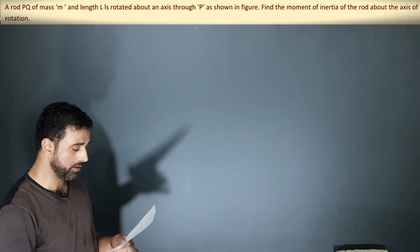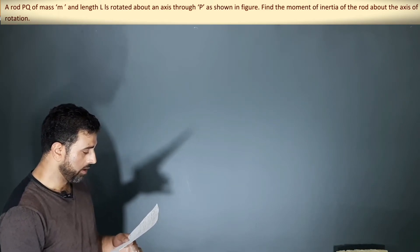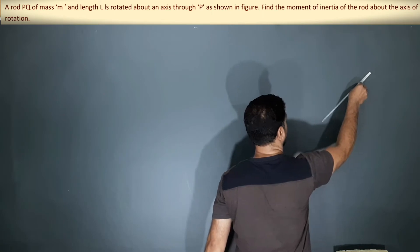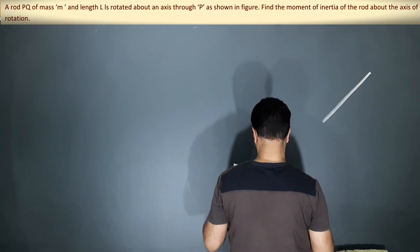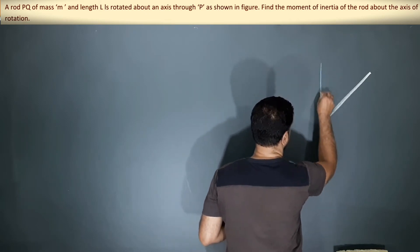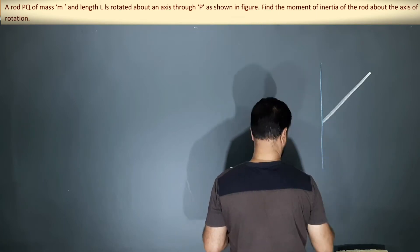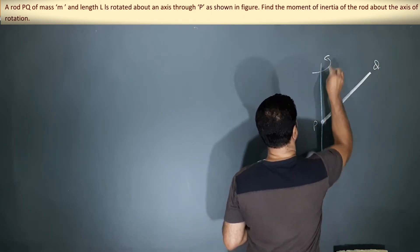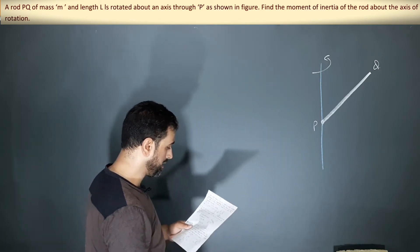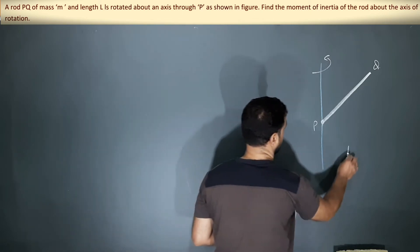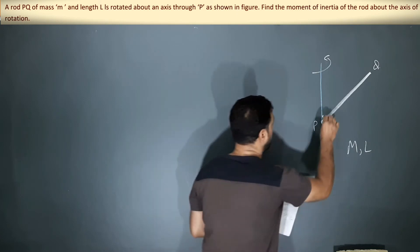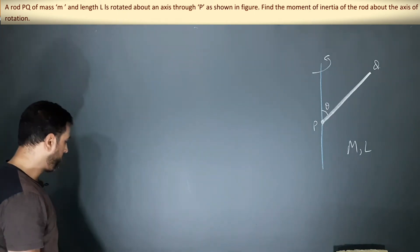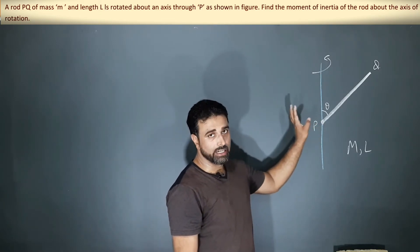A rod PQ of mass M and length L is rotated about an axis through P, as shown in the figure. So we need to find the moment of inertia. We have to go back to basics.